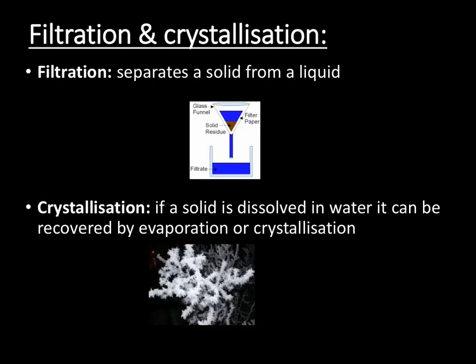As we saw in our example of salt and sand, filtration allows us to separate a solid from a liquid using filter paper. The filtrate will then carry on through — that's our liquid part — and the solid, the residue, will stay behind. We can then dry this solid in order to get a pure dry sample.